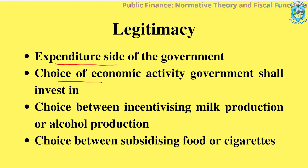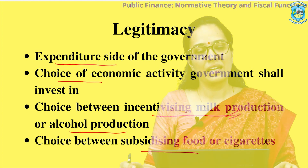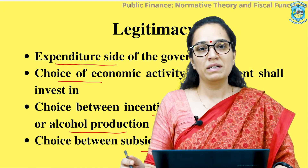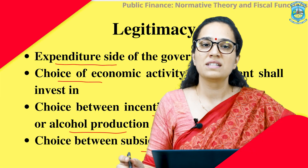For example, government may have to choose whether to incentivize milk production or alcohol production in the economy. Given the socio-economic objective of health or social well-being, government might incentivize milk production rather than alcohol production. On a similar line, it can have a choice between subsidizing food or subsidizing cigarettes. Again, for health purposes or general welfare, government might choose to subsidize food rather than cigarettes.